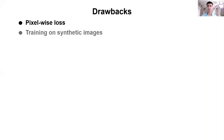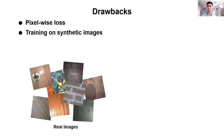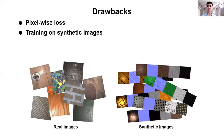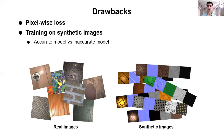Second, since obtaining ground truth SVBRDF parameters of real images is challenging, most of these methods use synthetic images to train their network. Specifically, they use procedurally generated SVBRDF parameters as the ground truth and render the input images with random lighting using the Cook-Torrance rendering model. The main problem here is that the distribution of synthetic and real images are different. Synthetic images are synthesized by the Cook-Torrance model; however, real-world images do not perfectly follow this model.